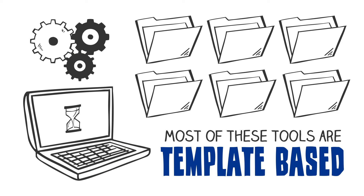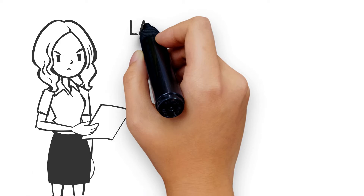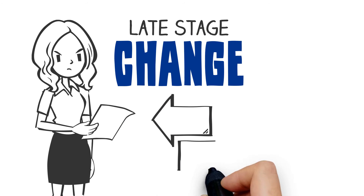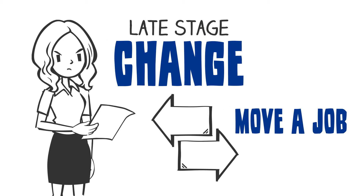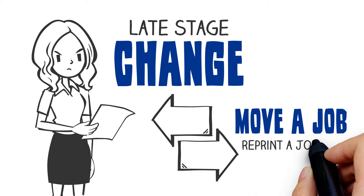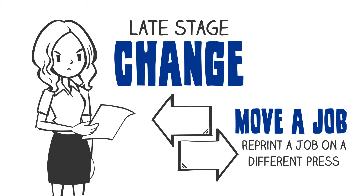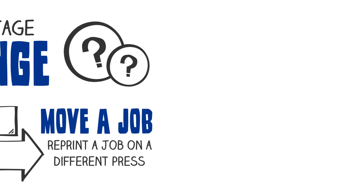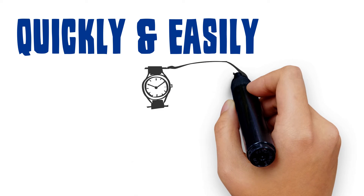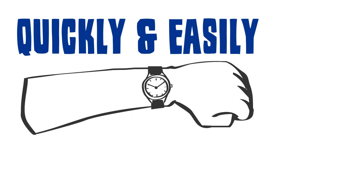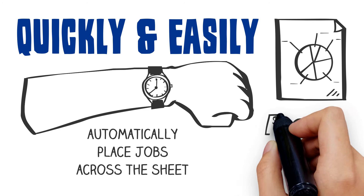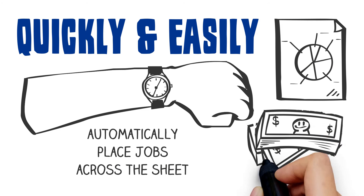This creates all kinds of headaches — for example, when there's a late-stage change to a job, or when you have to move a job from one press to another, or when you have to reprint a job on a different press. What if you could address these challenges? What if you could quickly and easily generate layouts and signatures which automatically place jobs across the sheet in the most efficient and cost-effective way?